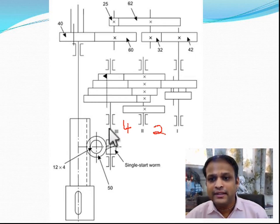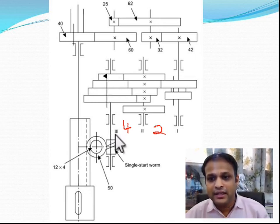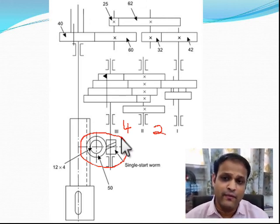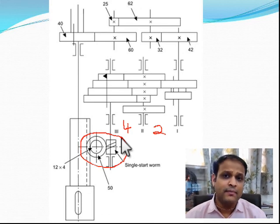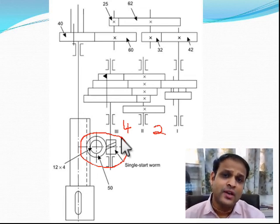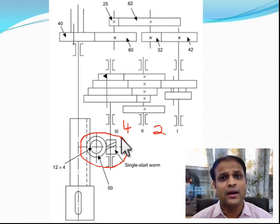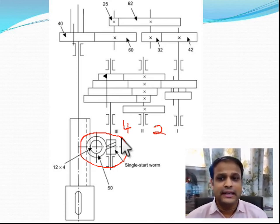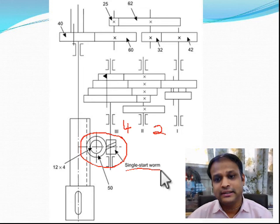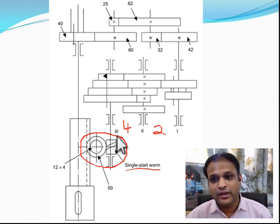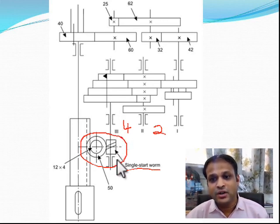After achieving these eight speeds, shaft three is connected to a worm and worm wheel. The RPM of the spindle is relatively higher while the feed required on a typical lathe is very small, so there has to be a very heavy reduction before rotary motion can be transmitted into linear motion. This heavy reduction is achieved by a single-start worm and worm wheel gearbox.